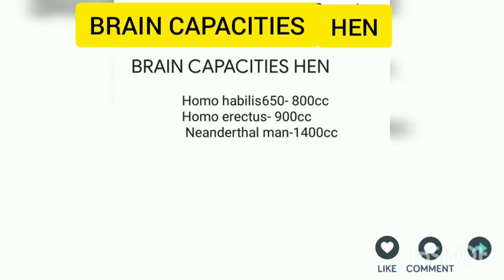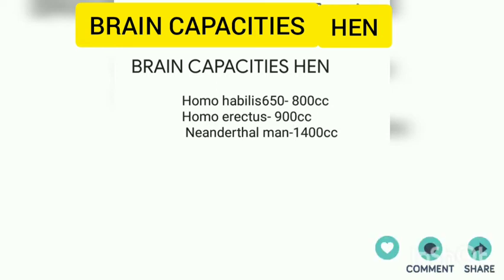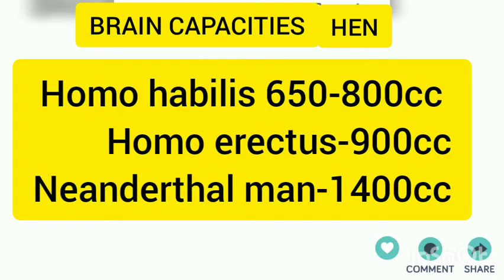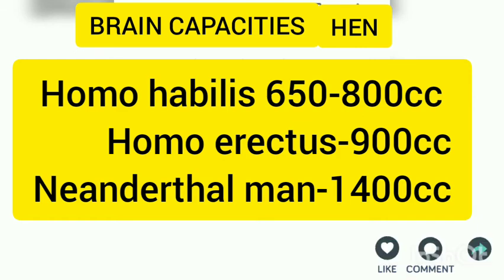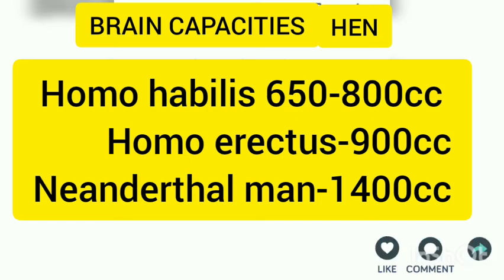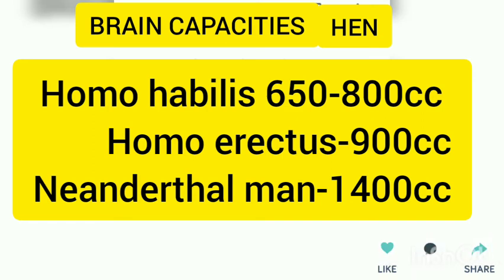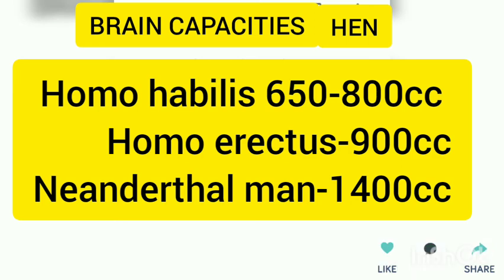To repeat: the trick is H-E-N — H is Homo habilis, E is Homo erectus, N is Neanderthal man. Write 8, 9, 14 in a vertical row, put two zeros in front of them, write CC, and add 650 extra in front of 800.